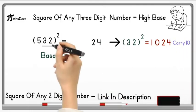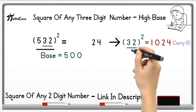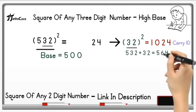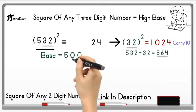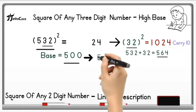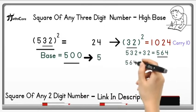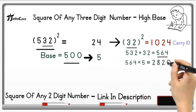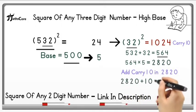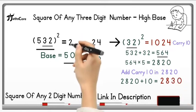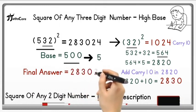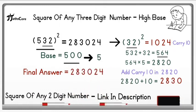In the next step, take whole number 532 and add 32 in it. So 532 plus 32 is equal to 564. Now multiply this 564 with base number, which is 500, so instead of 500 we have to write down 5 only. So 564 multiplied by 5 is equal to 2,820. Now add this carry 10 in it. So 2,820 plus 10 is equal to 2,830. Now write down this number before 24 in the product. So this is your final answer: 283,024, which is square of 532.